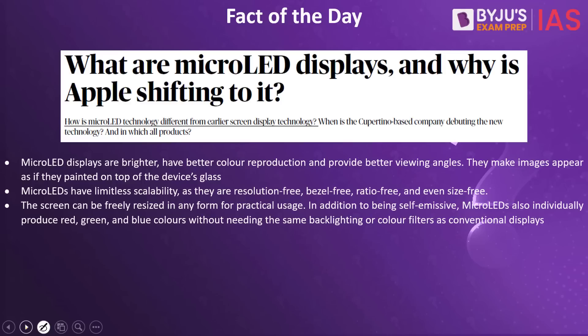Let us understand what micro LED is. A micro LED is an LED — a light emitting diode — which basically converts electrical energy into light energy. One micro LED measures less than 100 micrometers and can be about one hundredth of the size of a conventional LED. What are the advantages? This is a type of display that provides more color, offers higher brightness, and the amount of power consumption compared to OLED is far less.